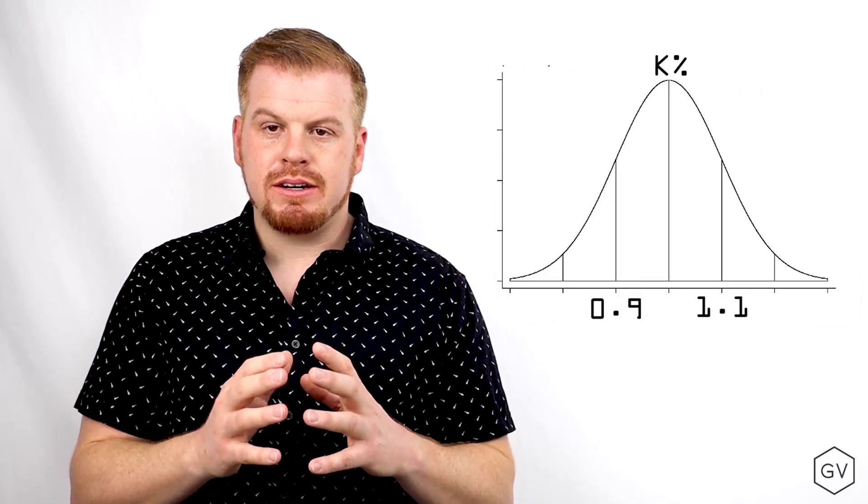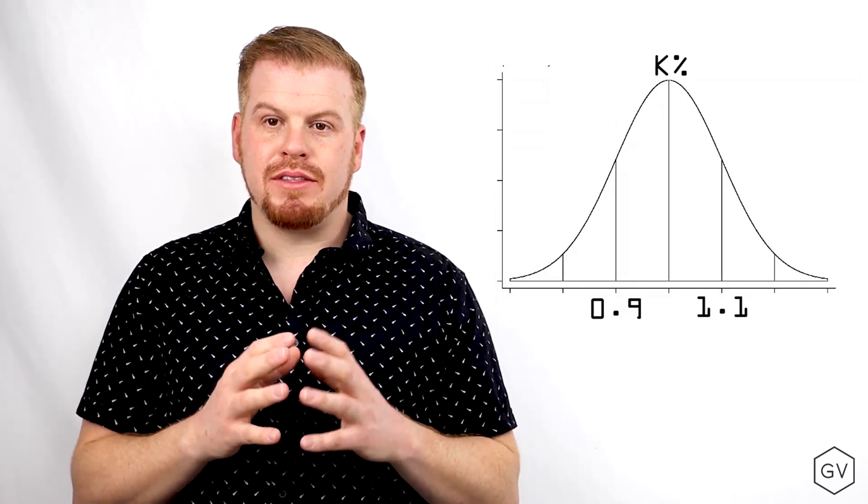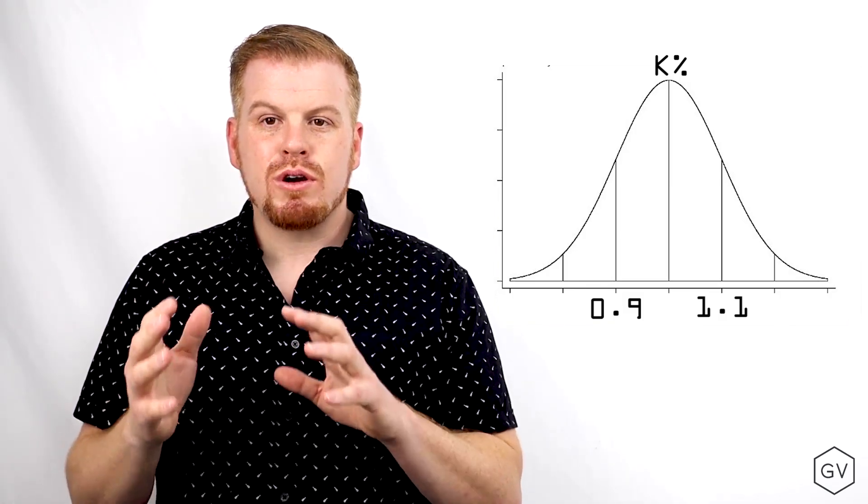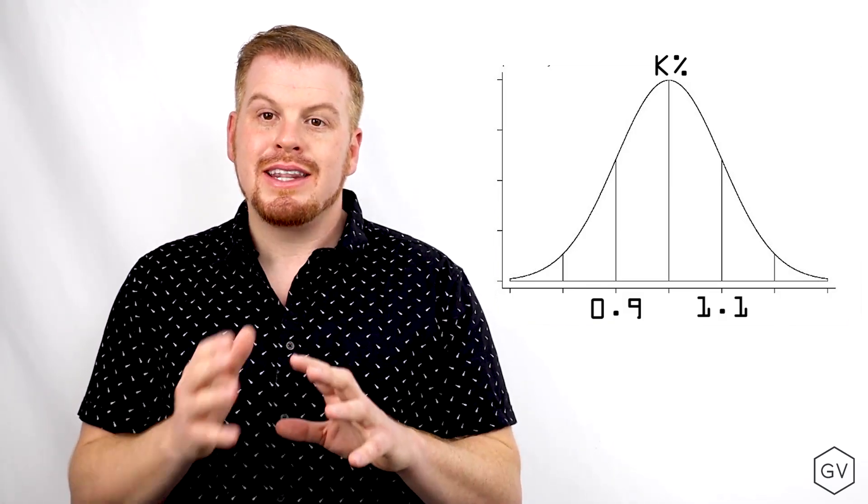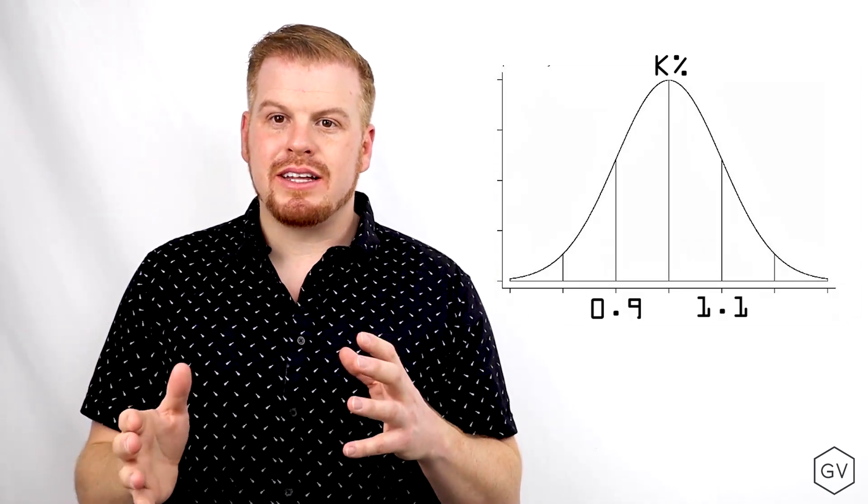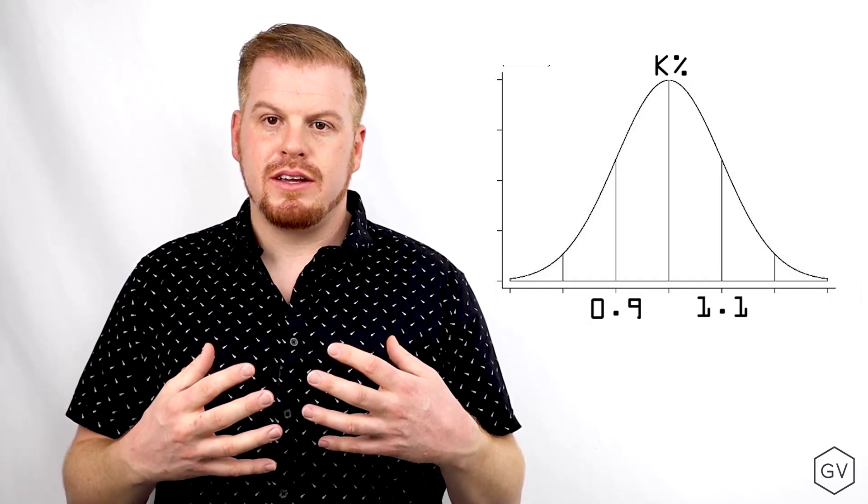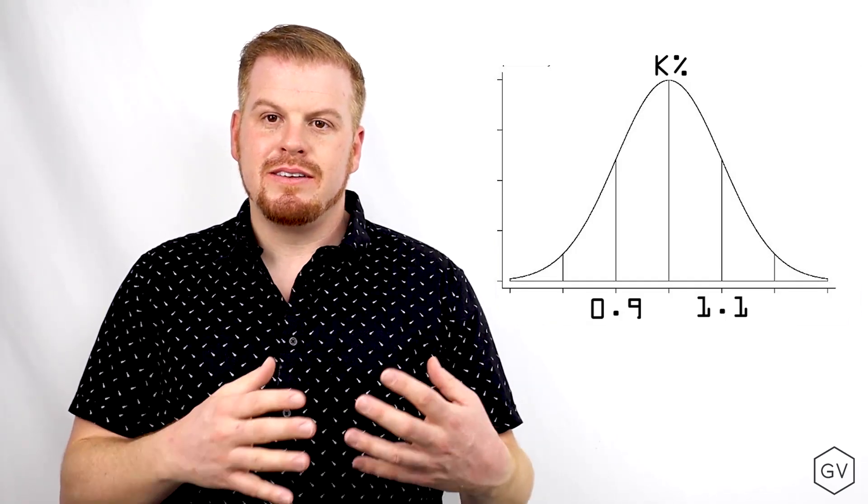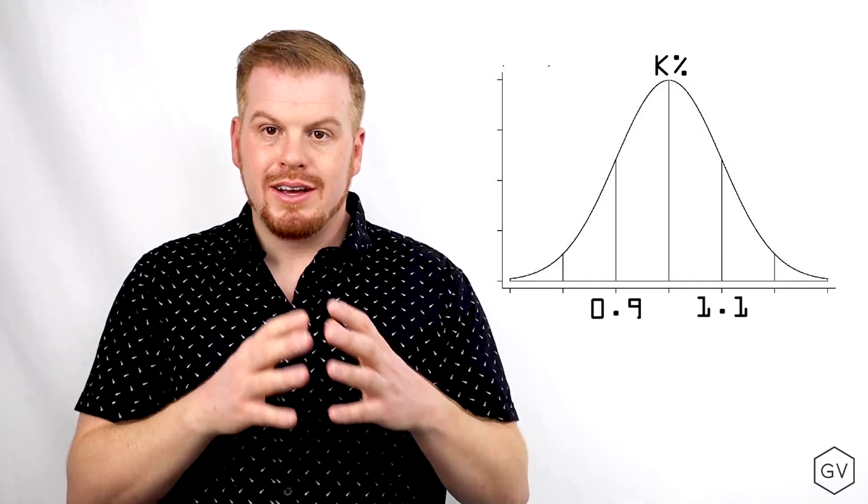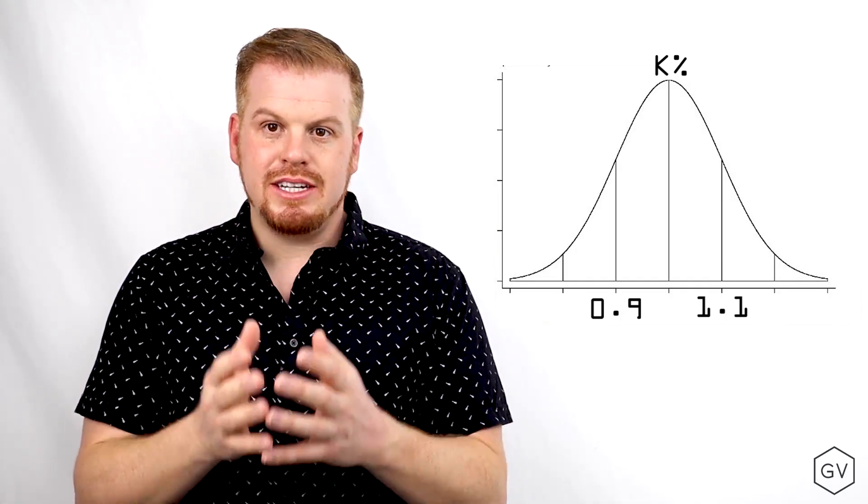Something important to note is that the distribution of wealth growth is maximized at the Kelly criterion and is symmetric around the Kelly criterion. Meaning, if you bet 10% more than Kelly, it's going to grow your wealth at the same rate as betting 90% of Kelly. The only difference is that betting more than Kelly increases the risk of bankruptcy. Betting less than Kelly also guarantees you never go bankrupt, but you'll grow slower. Kelly criterion guarantees you don't go bankrupt and you grow at the optimal rate.